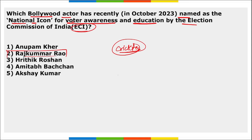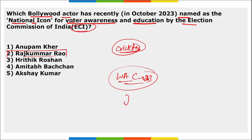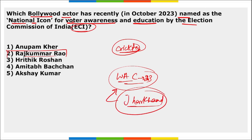Jharkhand unveiled a mascot for the Women's Asian Championship 2023. The name of that mascot is Juhi — unveiled by Jharkhand's Chief Minister.